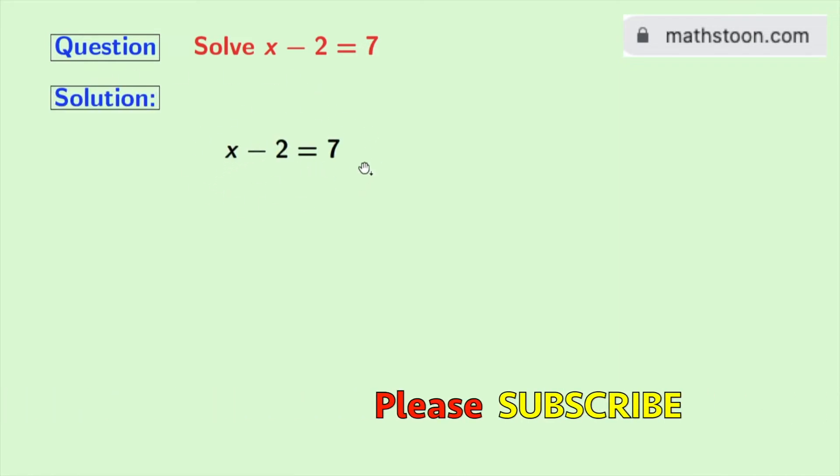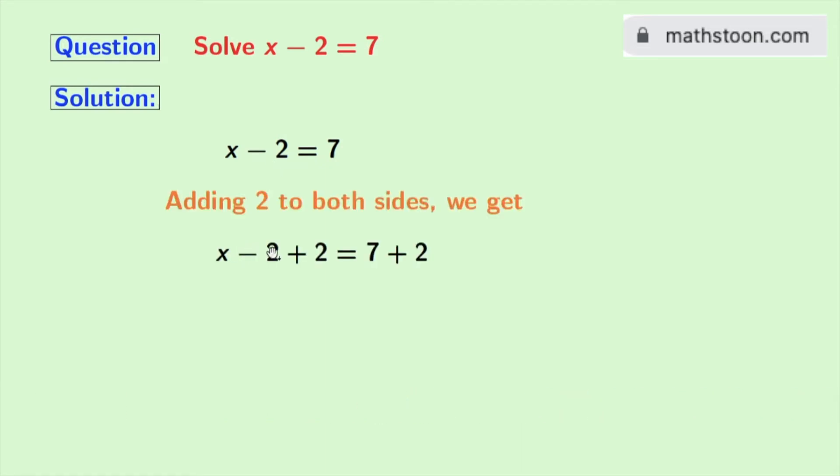This is our given linear equation. To solve this equation, we have to find the value of x. To get it, we will add 2 to both sides. Doing so, we get x minus 2 plus 2 is equal to 7 plus 2.